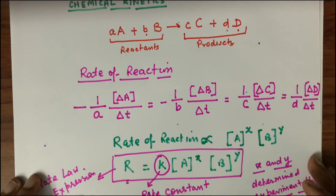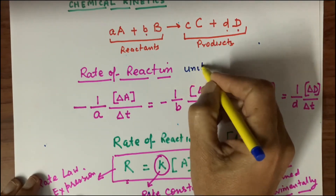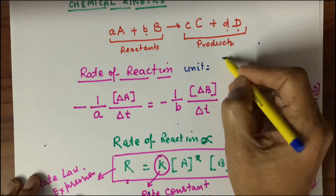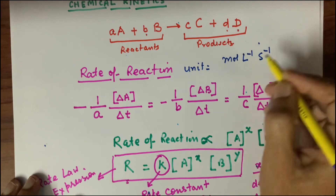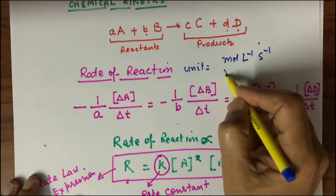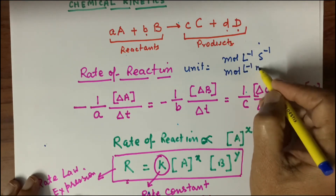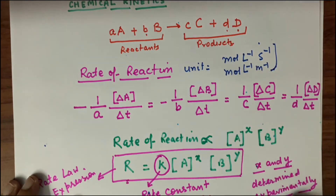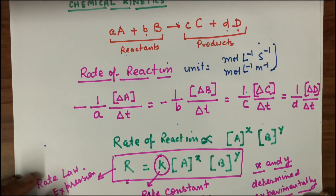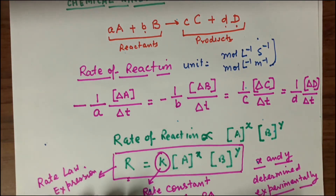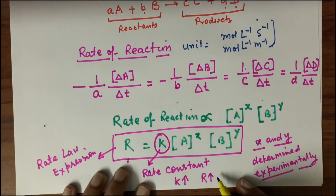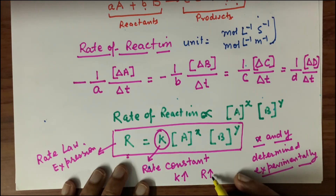Now, what is the unit of rate of reaction? The unit is mole per liter per second, if time is given in seconds; or mole per liter per minute, whatever be the case. K is the rate constant, and a higher value of K means a higher rate of reaction. Thank you very much.